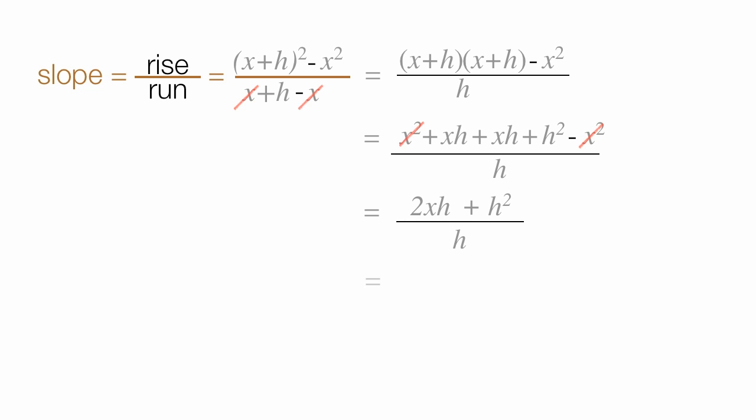Now I can factor out an h in the numerator. I have h times 2x plus h, divided by h. These two h's cancel out,